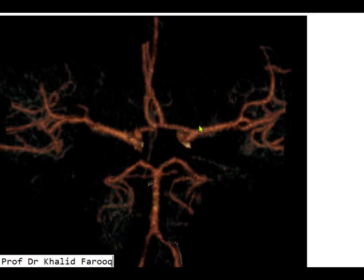This is a 3D image of the circle of Willis. We can see the basilar artery, posterior cerebral arteries, and anterior and middle cerebral arteries. Overall, there is no abnormality in the major vessels.